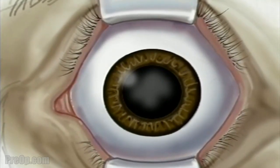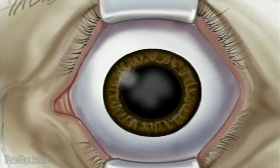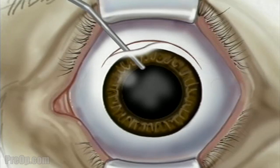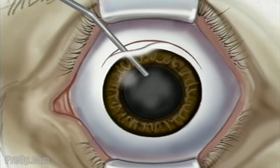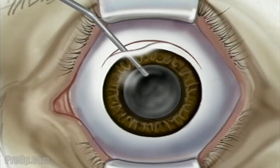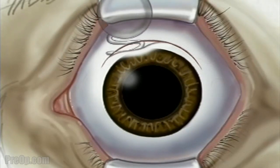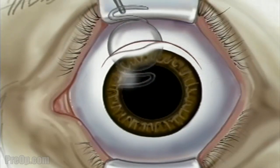By now the pupil will be fully open, or dilated. When the operative field is numb, the surgeon will use a microscope to help make an incision just above the iris. Next, the surgeon will open the top of the capsule and remove the lens.